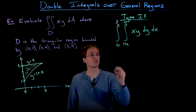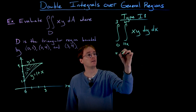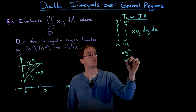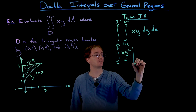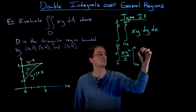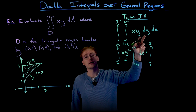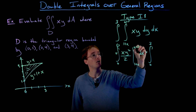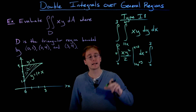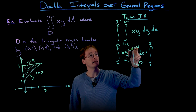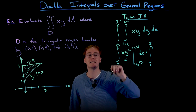Let's evaluate this double integral. First we find the antiderivative with respect to y, which is x times y squared over 2. We evaluate this at the limits y equals 4 and y equals 1+x and take the difference. Plugging in y equals 4, we get x times 16 over 2, which gives us 8x.